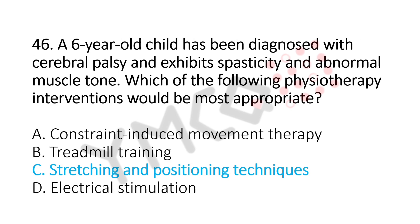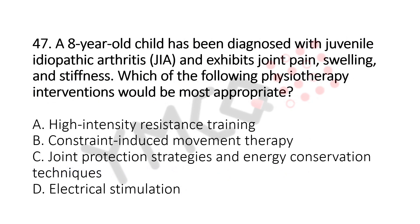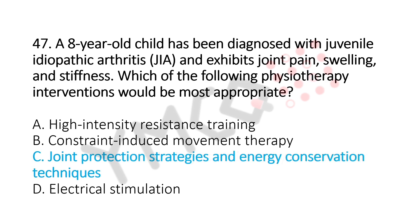Now let's move to question number 47. A 8-year-old child has been diagnosed with juvenile idiopathic arthritis, JIA, and exhibits joint pain, swelling, and stiffness. Which of the following physiotherapy interventions would be the most appropriate? Option A, high-intensity resistance training. Option B, constraint-induced movement therapy. Option C, joint protection strategies and energy conservation techniques. Option D, electrical stimulation. And the answer is Option C, joint protection strategies and energy conservation techniques.